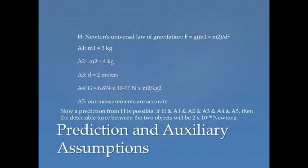So now a prediction from H is possible. If H, and A1, and A2, and A3, and A4, and A5, then the detectable force between the two objects will be 2 times 10 to the negative 10 newtons. The point is merely this, that the predictions yielded from a hypothesis never just come from the hypothesis itself. You always need additional claims, additional assumptions. And all of that taken together gives you a prediction, something that can actually be tested. Newton's law itself can't do that for you.